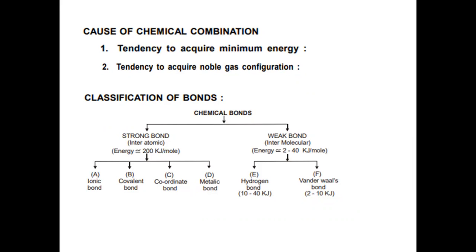Classification of bonds. Chemical bonds are mainly classified into two types based on their dissociation enthalpy, that is bond dissociation enthalpy: one is strong bond, another one is weak bond. Strong bonds are further classified into four types: ionic bond, covalent bond, coordinate bond, and metallic bond. Weak bonds are further classified into hydrogen bond and van der Waals bond.